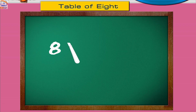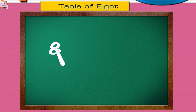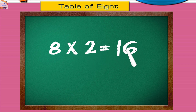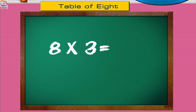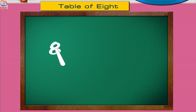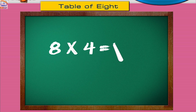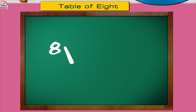Eight ones are eight. Eight twos are sixteen. Eight threes are twenty-four. Eight fours are thirty-two. Eight fives are forty.